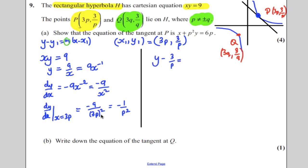is going to equal m, which is -1/p², x - x₁, so x - 3p.